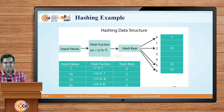The first input value to store is 7. So 7 mod 7 gives hash key 0, meaning 7 is stored at index 0. The next input value is 16: 16 mod 7 gives hash key 2, so 16 is stored at index 2. Similarly, 33 mod 7 gives index 5, so 33 is stored at index 5. The same process applies to the remaining values.